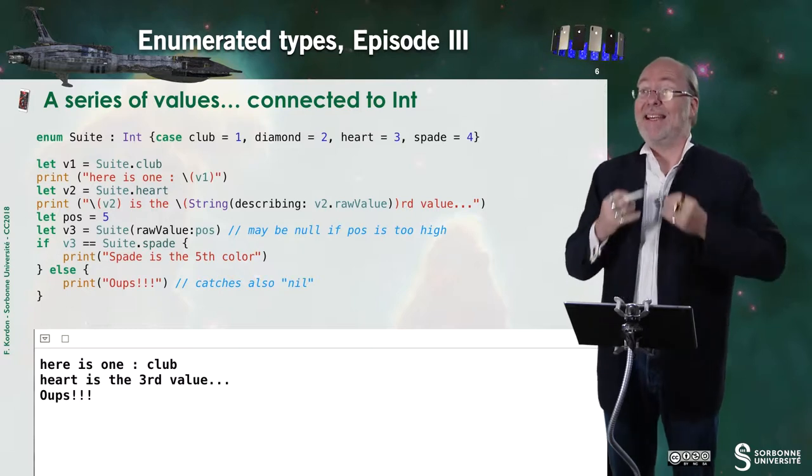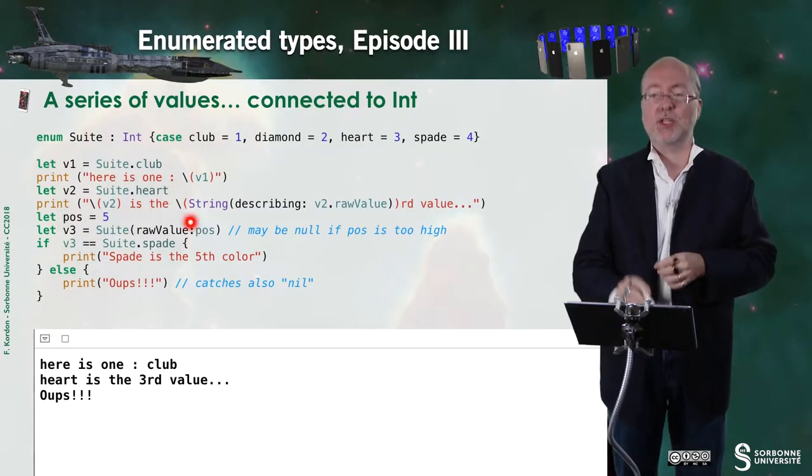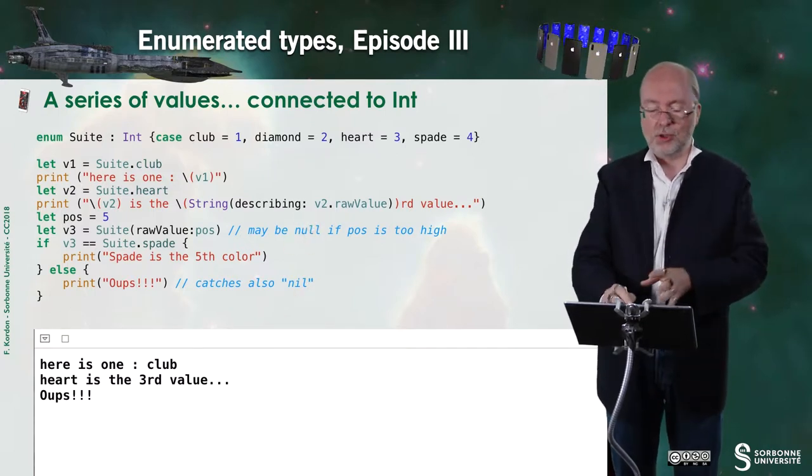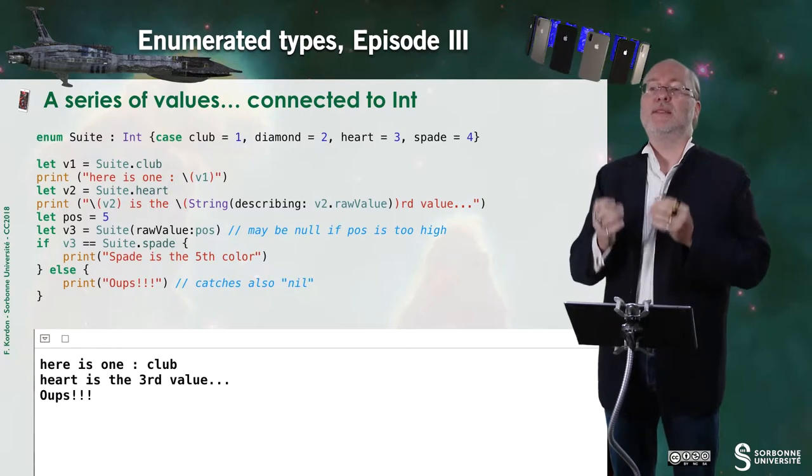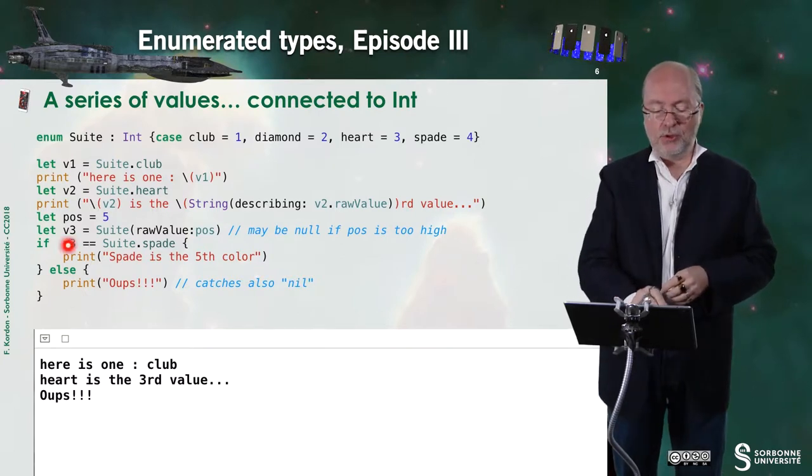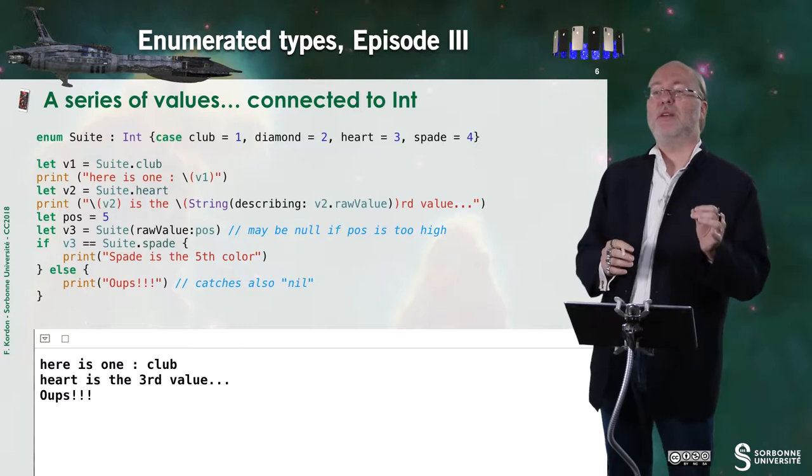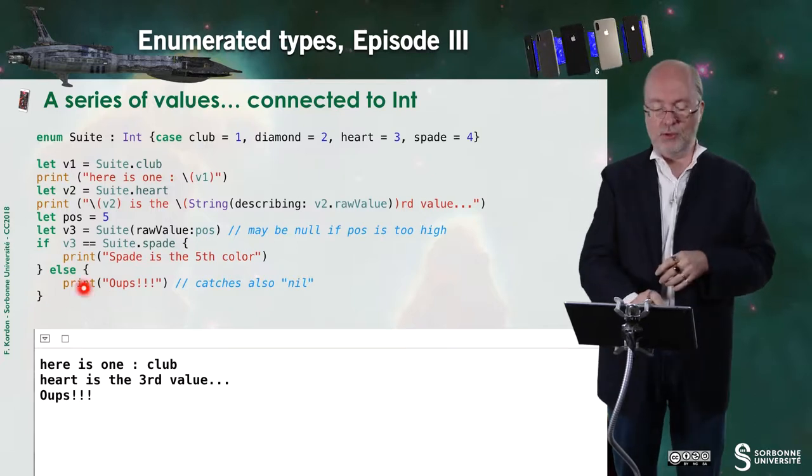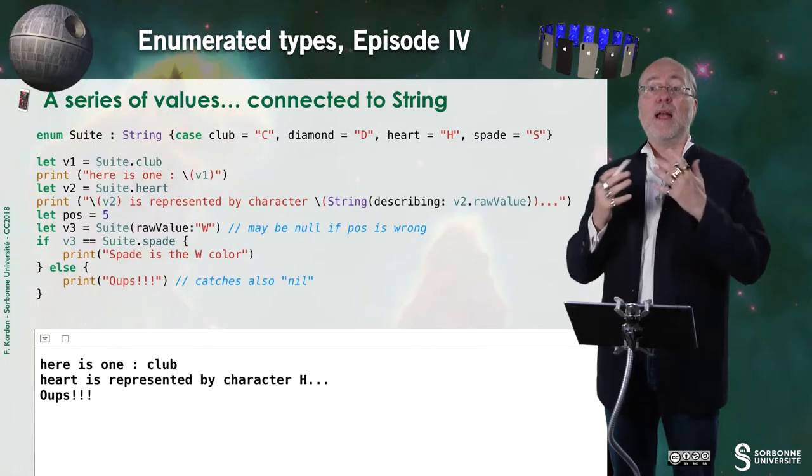So it means that here, I cannot have a value. Do you remember, in the introduction of this video, I mentioned the notion of optionals. We are in such a situation. Here, this expression returns no value. No value is a sort of, in fact, it's nil, not null. It's nil. And it means that I cannot find a value for this expression. So here, if I do the comparison like this, since v3 is equal to null, then the test is automatically wrong. And so you go there. As you see in the execution of this piece of code.